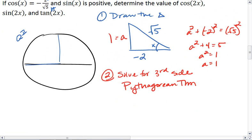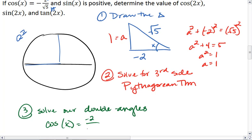Now that we have our third side, we can solve our double angles. To solve this, we want to realize that we already know cosine of x is negative 2 over root 5. We now know that sine of x is opposite over hypotenuse. That's 1 over root 5. And tangent of x, which is opposite over adjacent, is going to be negative 1 half.